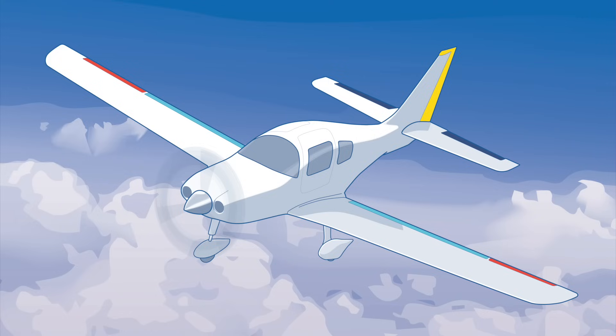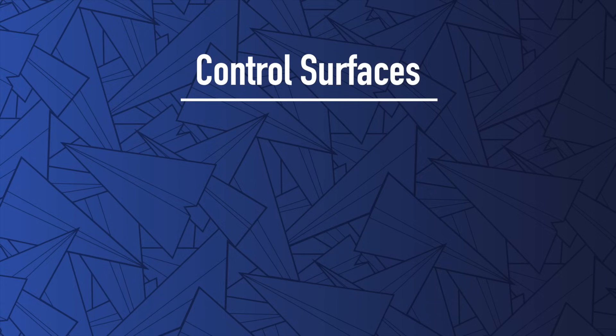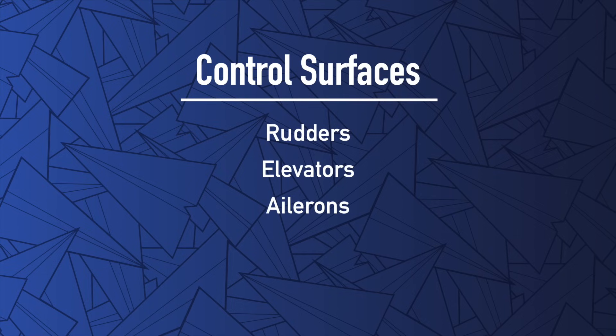A control surface is the moving portion of any flying surface. A pilot utilizes control surfaces to steer the plane in the direction he or she wants to travel. There are several different types of control surfaces, and each serves a different purpose, but they function similarly. Here's a list of the control surfaces found on planes: rudders, elevators, ailerons, elevons, and flaps.